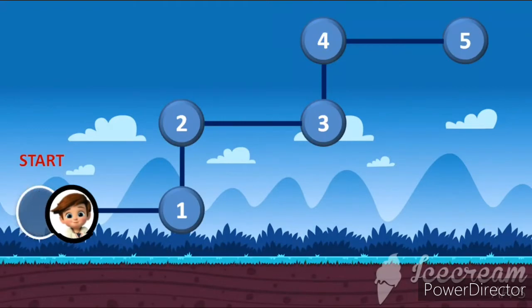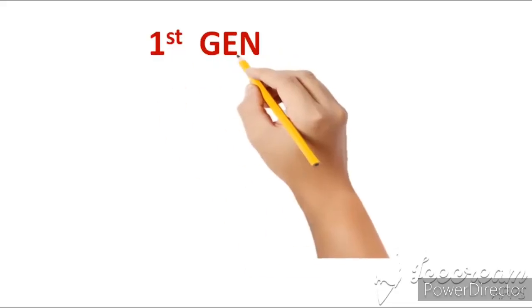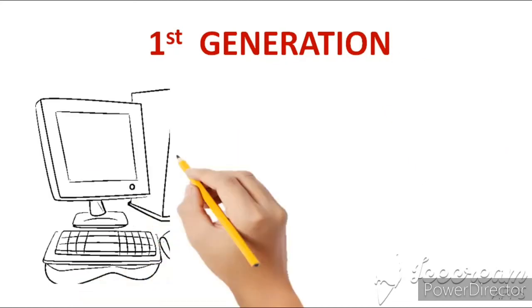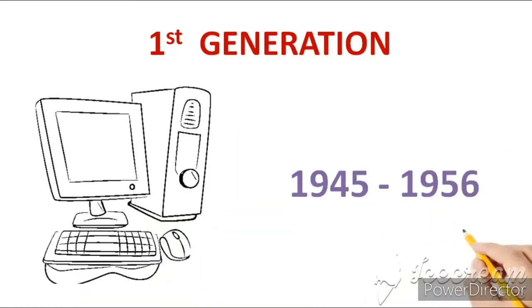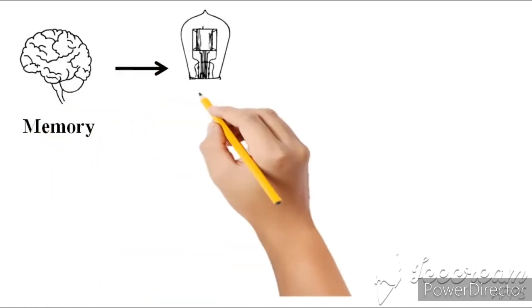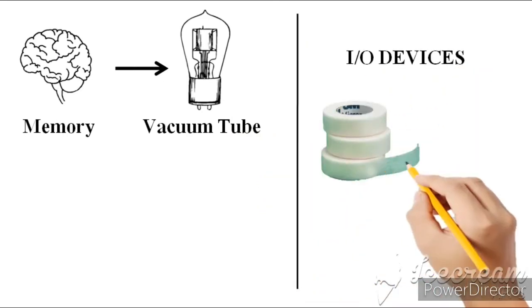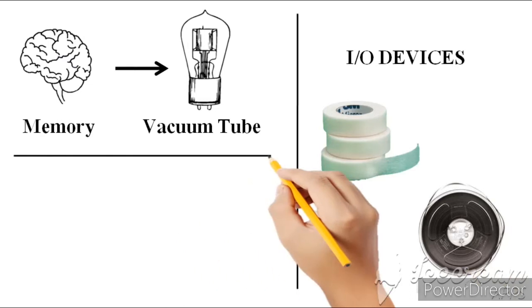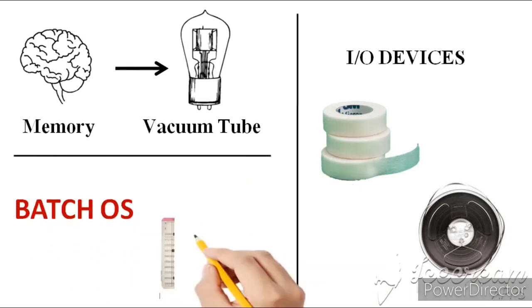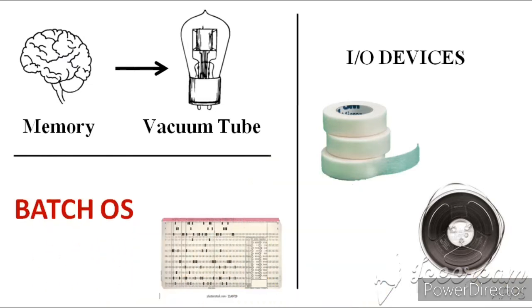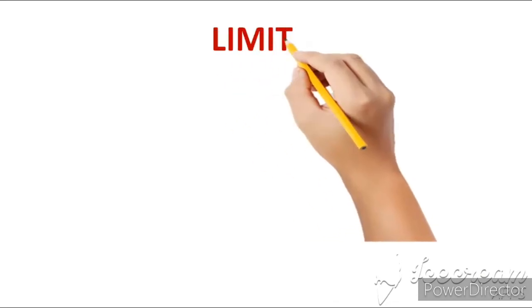So friends, let's go to the first generation. First generation computer's period of time is 1945 to 1956. But keep your attention that this period of time is not fixed — it varies across different books, different websites, and different readings. First generation computer's memory was produced by vacuum tubes, and also paper tapes and magnetic tapes were used. These computers were completely based on batch operating system and punch cards.